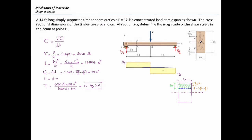Now let me determine the value of shear stress at point K, following the same procedure. The shear force at section AA is the same, equal to 6,000 pounds. The moment of inertia is not changing since it doesn't depend on the point of interest, so that is again 1687.5 inches to the fourth. But Q is changing, and T may change as well.